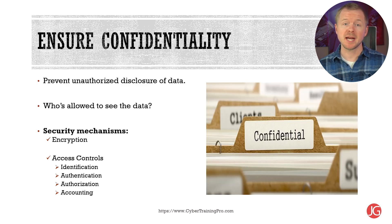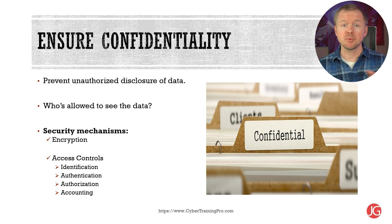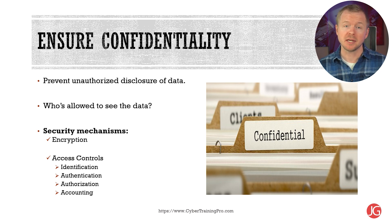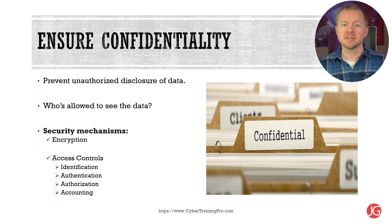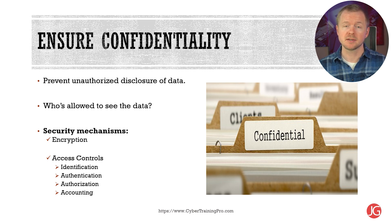The first component of the CIA triad is confidentiality, which means to prevent the unauthorized disclosure of data. We want to make sure that only people who are approved can see and understand data and prevent everybody else from seeing it. The two most popular ways to ensure confidentiality are encryption and access controls.